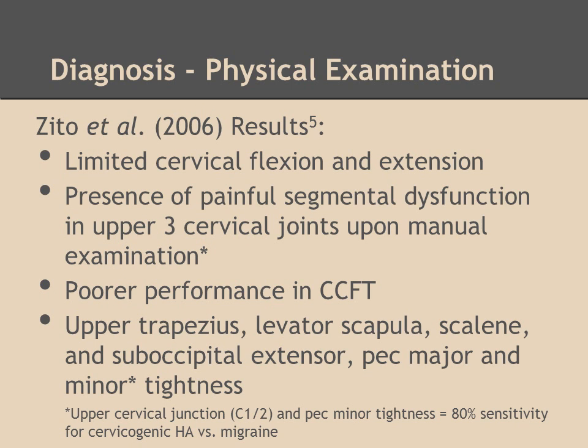The Zito et al. study found similar findings as Child's, but adds upper quarter tightness and weakness in the muscles mentioned here, which include the upper trapezius, levator scapula, scalenes, and suboccipital extensors.